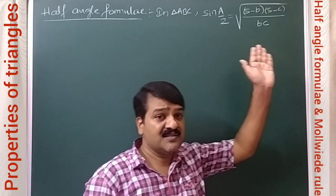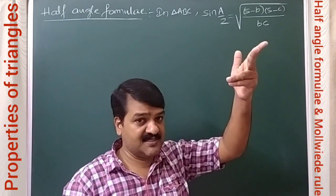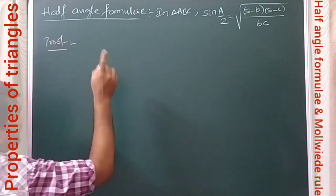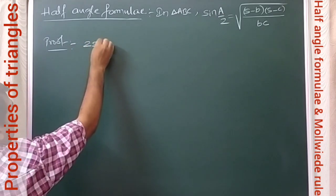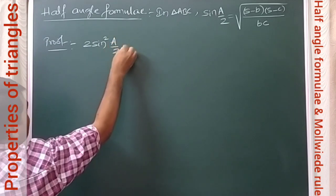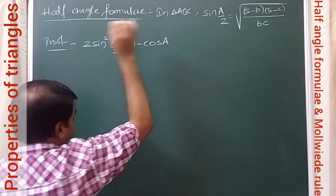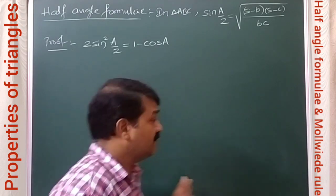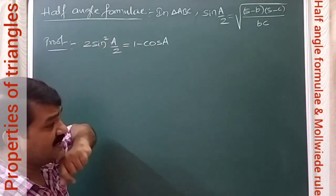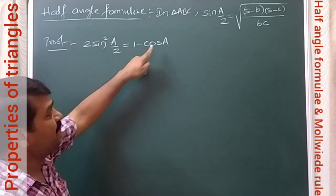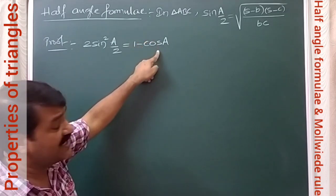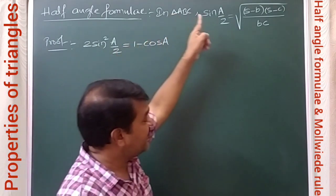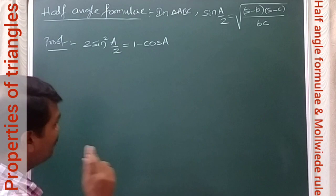So let us prove the first result. Similar to this we have two more results. In order to prove this one, first I will consider the formula 2 sin²(A/2) = 1 − cos A. This comes from the multiple sub-multiple formulae of trigonometry. Using the cosine rule to substitute cos A, we can simplify and obtain the value of 2 sin²(A/2), from which we can write the value of sin(A/2).